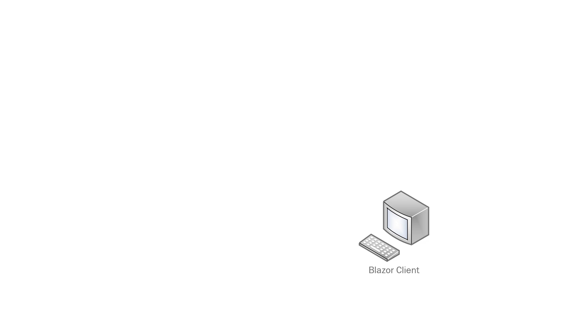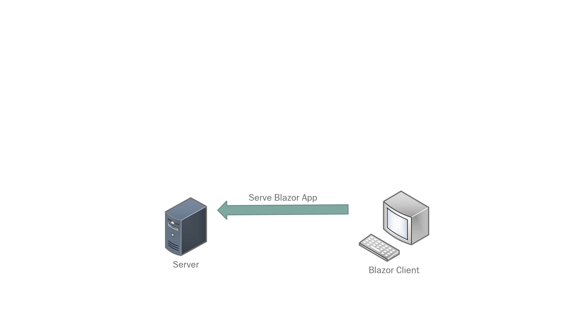If we just take a look at the setup we had previously, we really just had these two applications, the client for Blazor and the server, but the server was doing two jobs. It was serving up the Blazor front-end and also acting as an API so the Blazor front-end could then get hold of data that it was going to display.